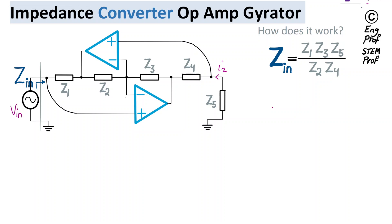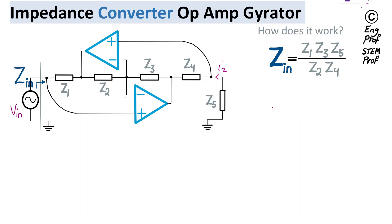Now let's try to figure out why we have this relation. To find the input impedance, one of the best ways is to apply a test voltage Vn, and then because of that Vn, there is a current that flows through the circuit — I_in, let's say I1 — that I need to find. Then by dividing these two values, I can find Zin.